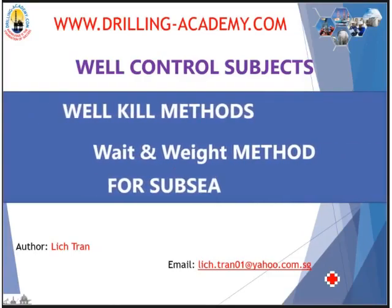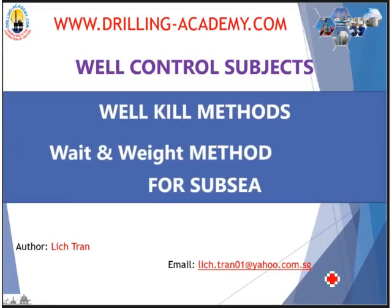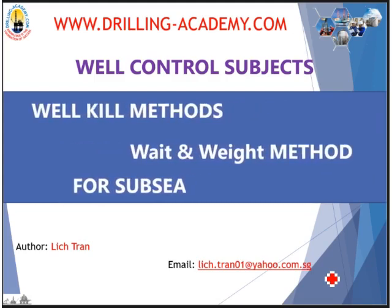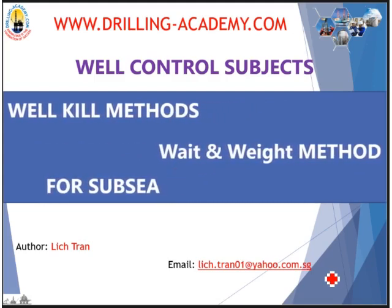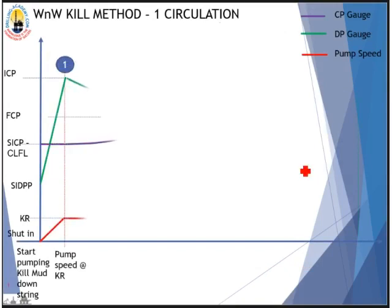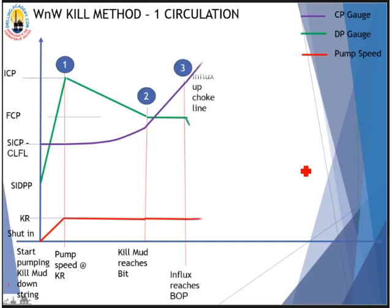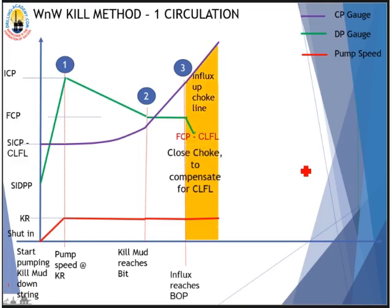Welcome to drilling-academy.com. To continue this series on well control, this video is made in slow motion mode about the well kill method — the Weight and Weight method for subsea operations. Theoretically, there is only one circulation to kill the well. You set the well in and wait for kill mud to be ready, then pump kill mud down to circulate the influx out of the well and kill the well. This results in much shorter time on choke, lower annulus pressure. However, the chance of gas migration is higher during waiting time and more calculations need to be done before starting circulation.